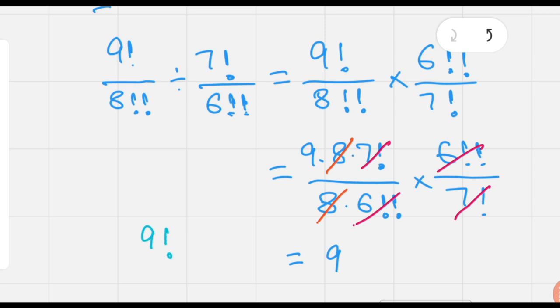Thus, 9 factorial over 8 double factorial divided by 7 factorial over 6 double factorial is equal to 9.